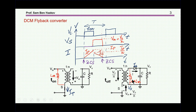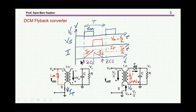Now, the difference between a CCM (Continuous Current Mode) and a DCM (Discontinuous Current Mode) is that the current of the energy-storing inductor is going up, and then at the secondary it'll go down to zero. And there'll be a period when there is no current in this inductor, either in the primary or the secondary. Hence the name discontinuous current mode flyback converter.